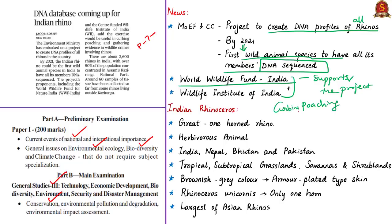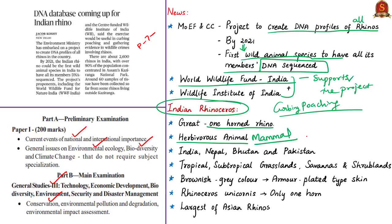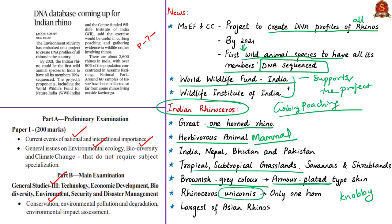The Indian rhinoceros is also called the Great One-Horned Rhino. It is a herbivorous mammal commonly found in Nepal, Bhutan, Pakistan, and India — widely seen in Assam. They live in tropical and subtropical grasslands, savannas, and shrublands. They can run at speeds up to 40 km/h for short periods and are excellent swimmers. They have excellent senses of hearing and smell but relatively poor eyesight. They are brownish gray, hairless, with knobby armor-plated skin. As their scientific name Rhinoceros unicornis suggests, they have only one horn.